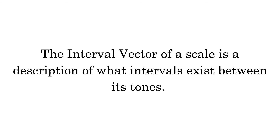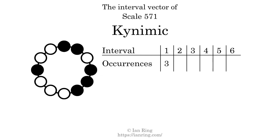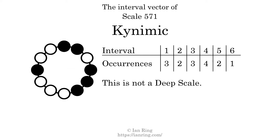The interval vector of a scale is a description of what intervals exist between its tones. There are three intervals with the size of one semitone, two intervals with the size of two semitones, three intervals with the size of three semitones, four intervals with the size of four semitones, two intervals with the size of five semitones, and one interval with a size of six semitones. Each interval does not appear in this scale a unique number of times, so this is not a deep scale.